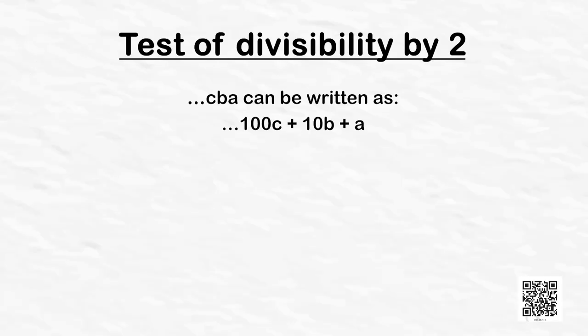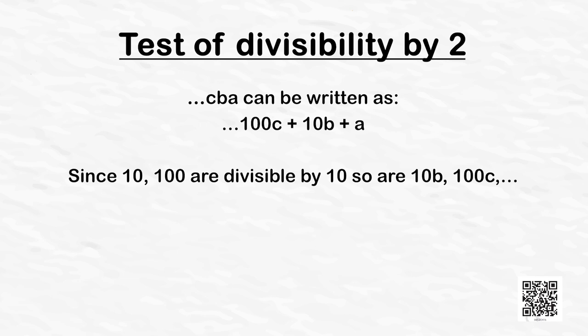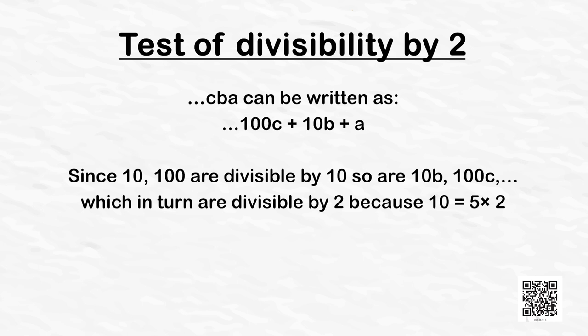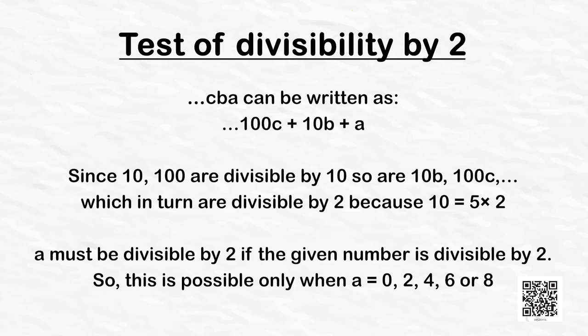Let's try to explain this rule. Any number ...CBA can be written as ...100C + 10B + A. Since 10 and 100 are divisible by 10, so are 10B, 100C and so on, which in turn are divisible by 2 because 10 = 5 × 2. And as far as number A is concerned, it must be divisible by 2 if the given number is divisible by 2. So this is possible only when A = 0, 2, 4, 6, or 8.